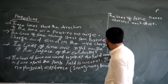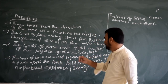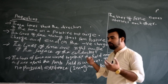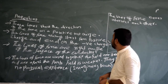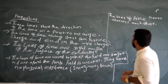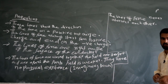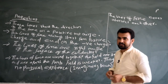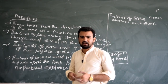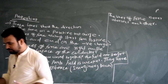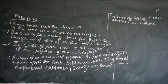Where lines are close together, the field is strongest, and where they are apart, the field is weaker. These lines have no physical existence — they are imaginary lines. The lines of force never intersect each other. This is the last point — they never intersect each other.